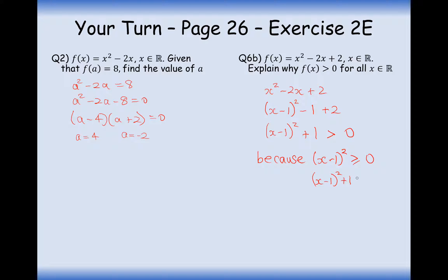So if you need to prove that a function is bigger than 0, complete the square of it, and then show that you've got something squared, and then maybe plus a positive term that will definitely be bigger than 0.